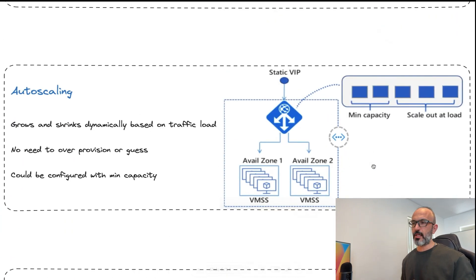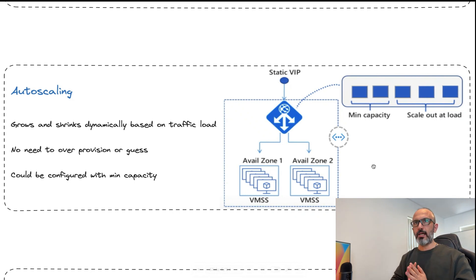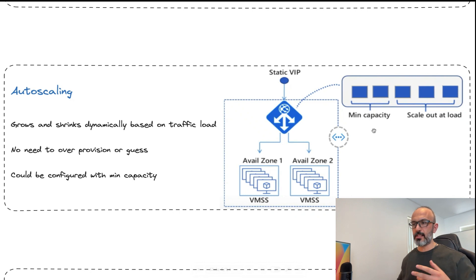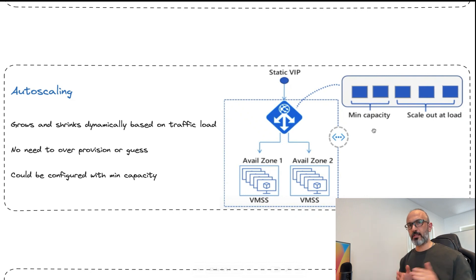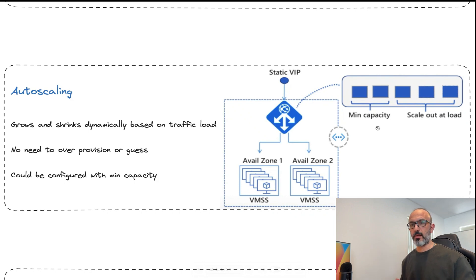Another intelligence built into Azure Application Gateway is auto-scaling. Instead of you having to guess or over-provision for traffic load, depending on a scaling threshold you define, if demand increases past that threshold it will scale out and provision new instances of your Azure Application Gateway to handle the demand. You can also set a minimum capacity if you want two or three instances available at all times.